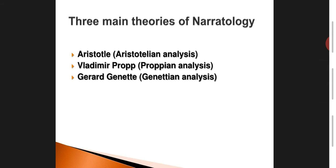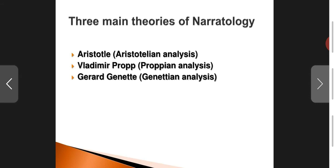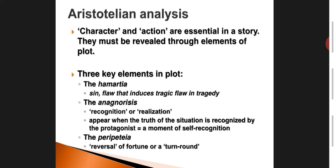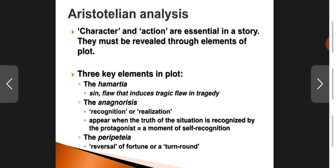The three main theories of narratology — Aristotle, Vladimir Propp, and Genette — were the trendsetters during their own periods in the field. As far as Aristotelian analysis is concerned, character and action are essential in a story and must be revealed through elements of plot. Character is revealed through action, so prime importance was given to action. A character is revealed through three main elements of plot.